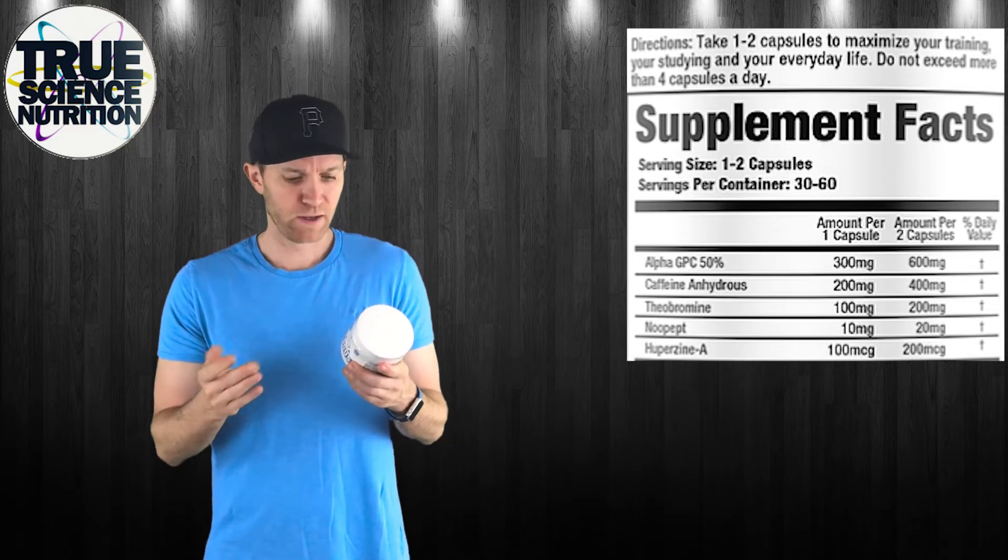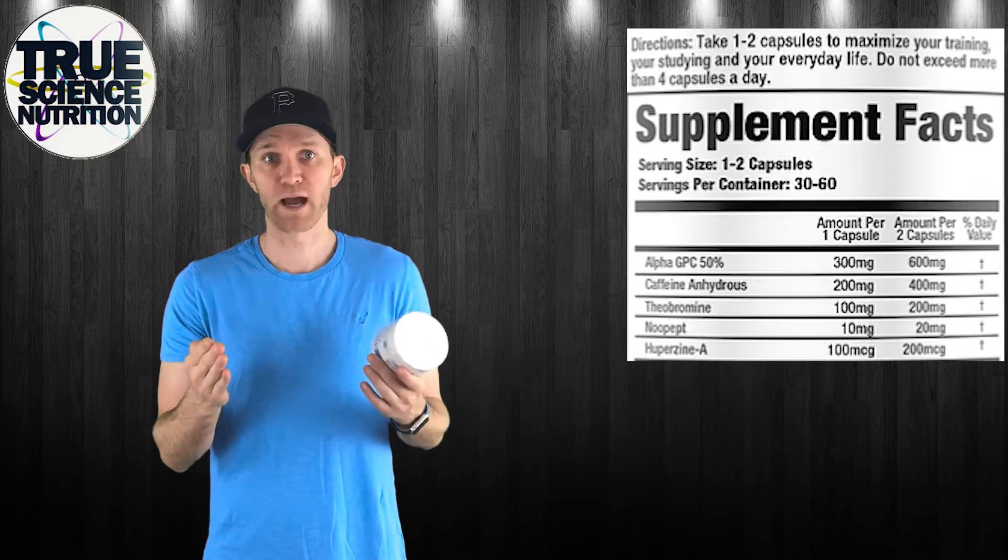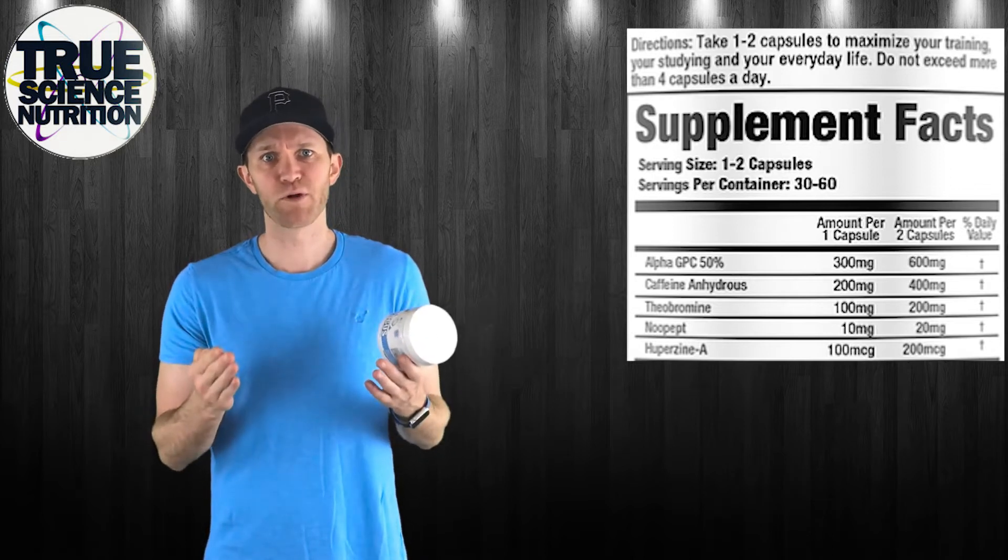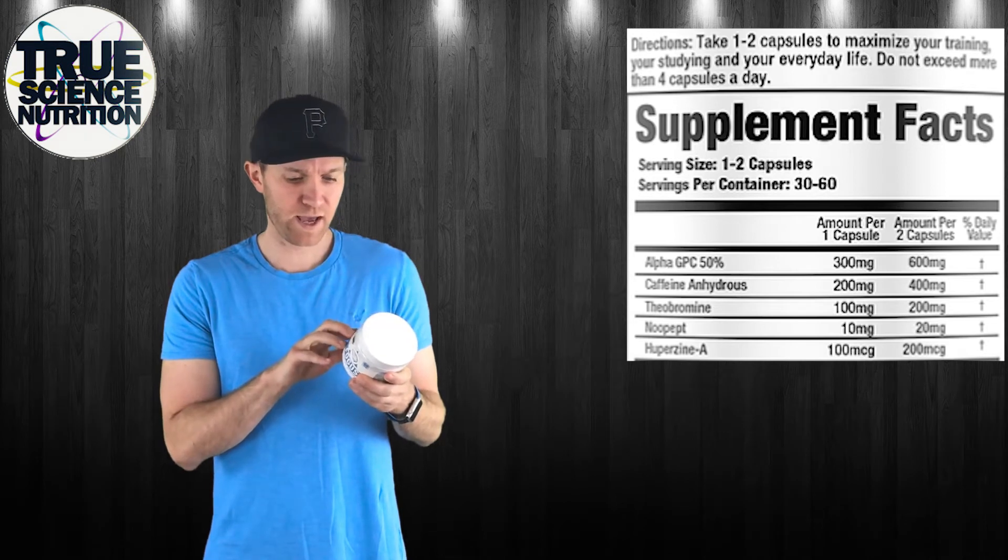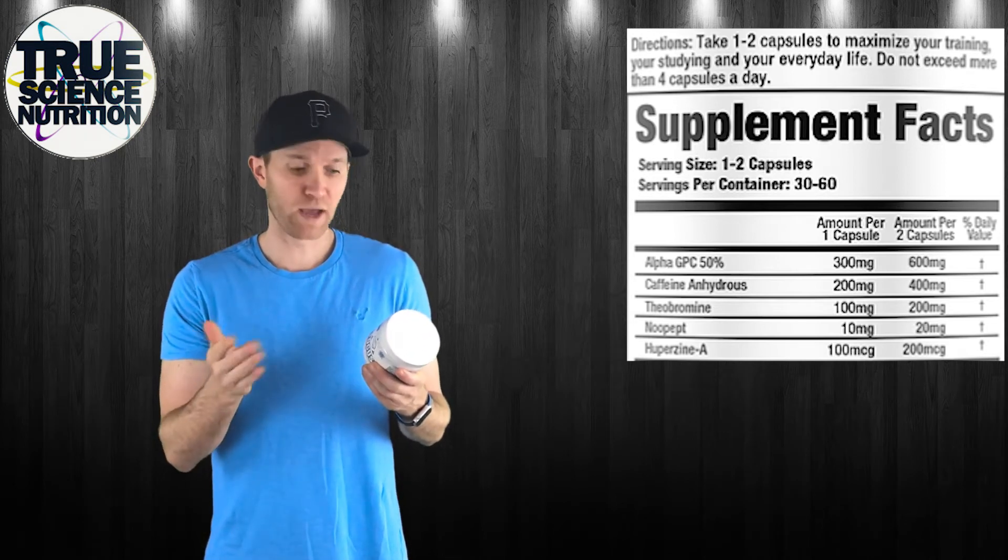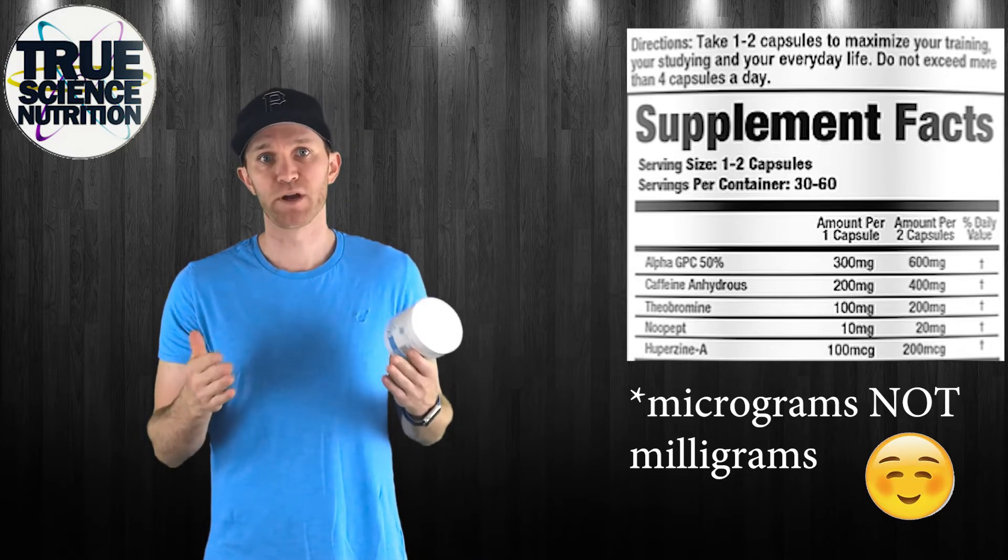Next you see Nupit. Either 10 milligrams or 200 milligrams, depending on if you take one or two capsules. That enhances memory and improves learning. And lastly, Hooperzine A. It's one or two capsules, 100 milligrams or 200 milligrams. That enhances your memory and cognition.